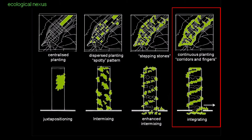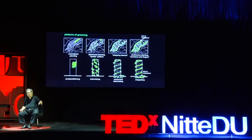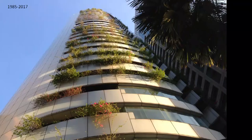We started to map the different ways this could be done. You can put vegetation in one location, as in the first diagram. You can have a spotty relationship in the second, or a stepping stone relationship. But the ideal relationship between the biotic and abiotic constituents is the weaving pattern you can see in the last diagram.